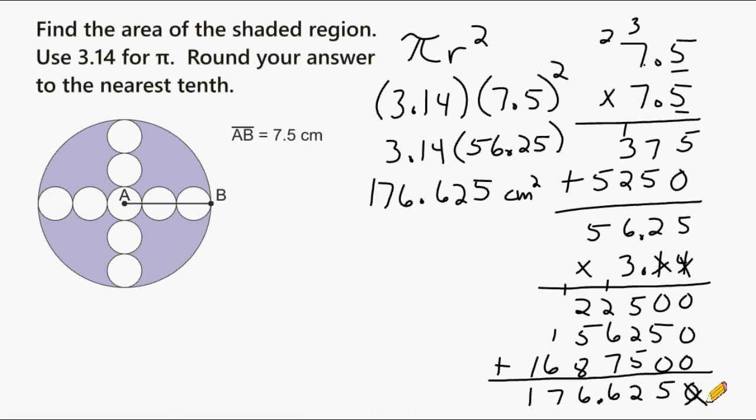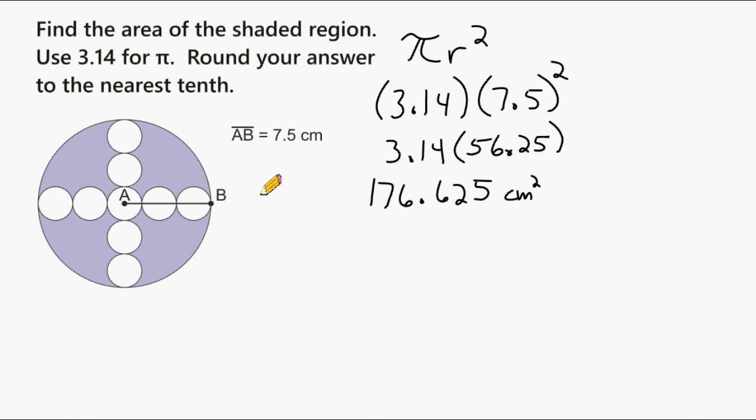Notice that I got rid of the 0 here at the end. It is unnecessary. If you ever have a 0 at the end of a value and it's after a decimal, we can just eliminate that 0. So what we have to do now is figure out what the total area is of all these small white circles here, and then take that total and then subtract it from this total right here to figure out what the area of the shaded region is. All right, what we have to do now is determine what is the area of one of these smaller circles here.